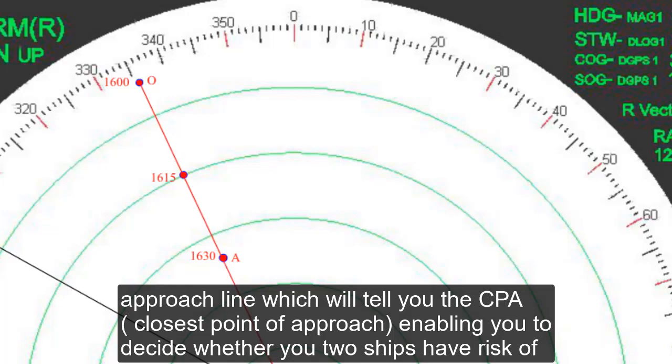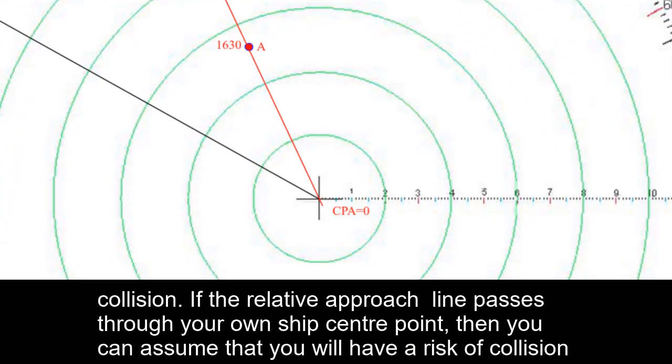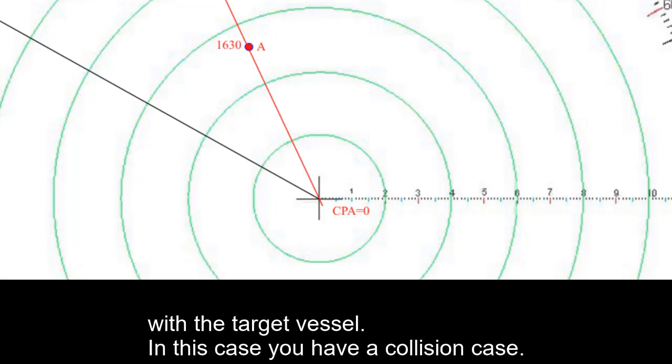The OA line is called the relative approach line, which will tell you the CPA, closest point of approach, enabling you to decide whether your two ships have risk of collision. If the relative approach line passes through your own ship's center, then you can assume that you will have a risk of collision with the target vessel. In this case, you have a collision case.